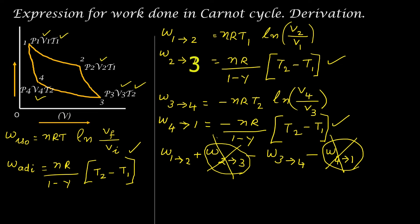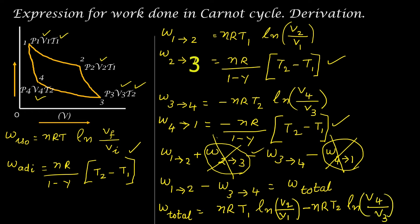Work done 1 to 2 and work done 3 to 4 only remains. One is positive and the other is negative, but the quantities are different. So work done 1 to 2 minus work done 3 to 4 is the total work done. Substituting, work total is equal to nRT1 natural log (V2 by V1) minus nRT2 natural log (V4 by V3). We will add up one more point here.